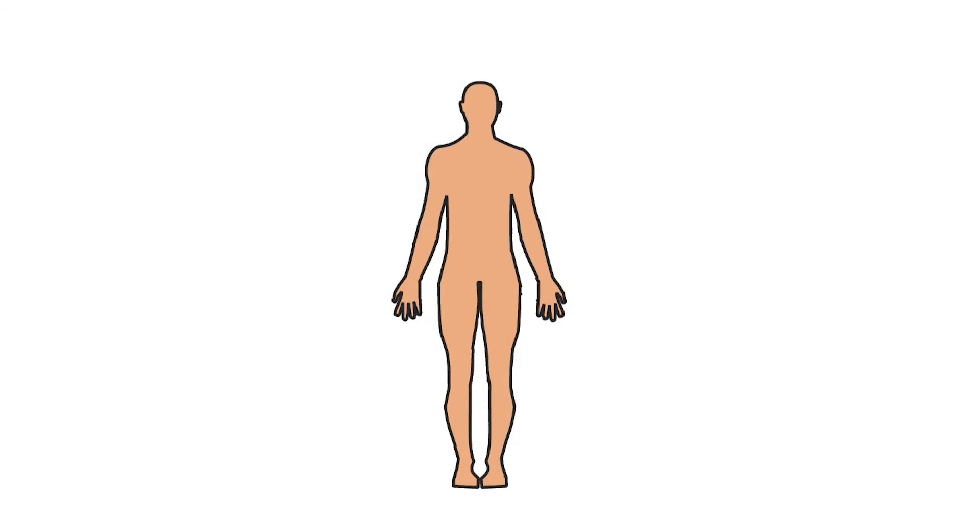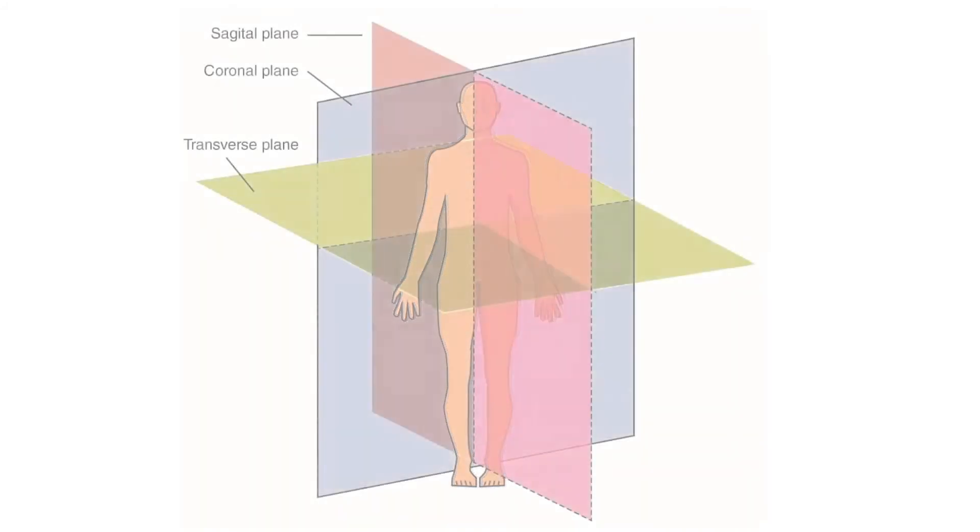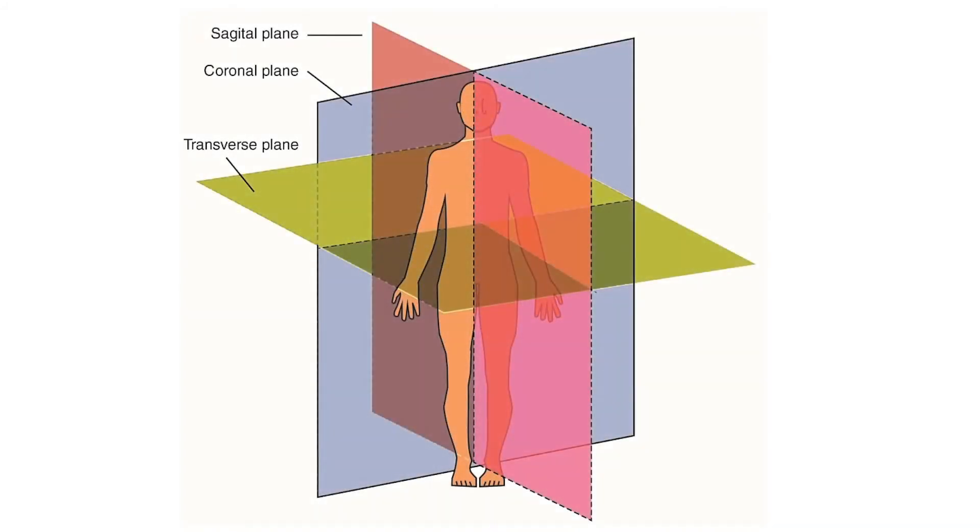For example, a transverse plane can run parallel to the ground at the knee level, dividing the leg into the upper thigh portion and lower shin and foot portion. Opposite the transverse plane is the sagittal plane, which divides the body not into upper and lower, but rather left and right sides. Looking at our diagram, this pink sagittal plane separates the body into left and right sides exactly in the middle, making it a mid-sagittal plane, because the division provides two equal halves.